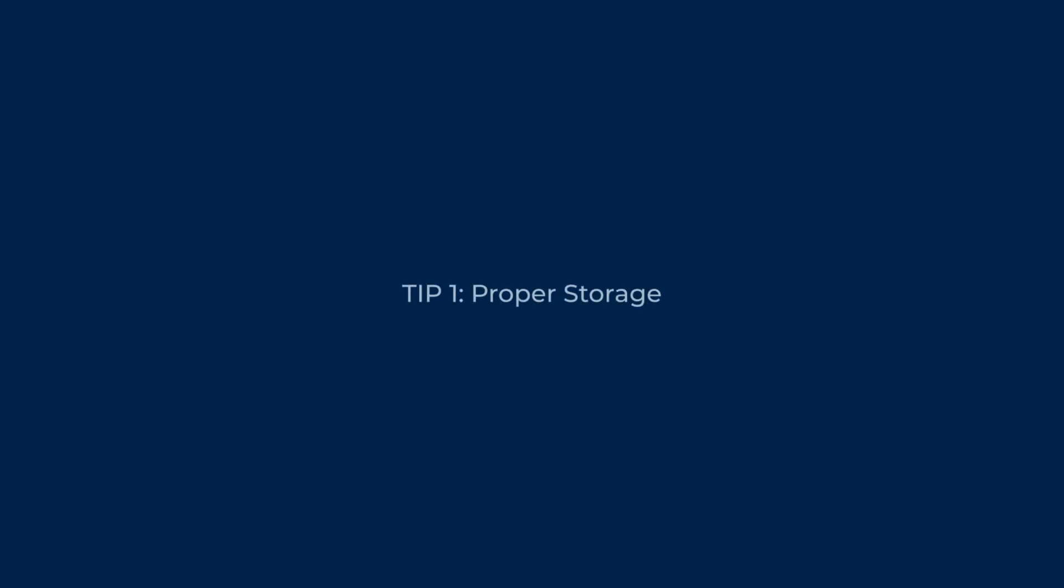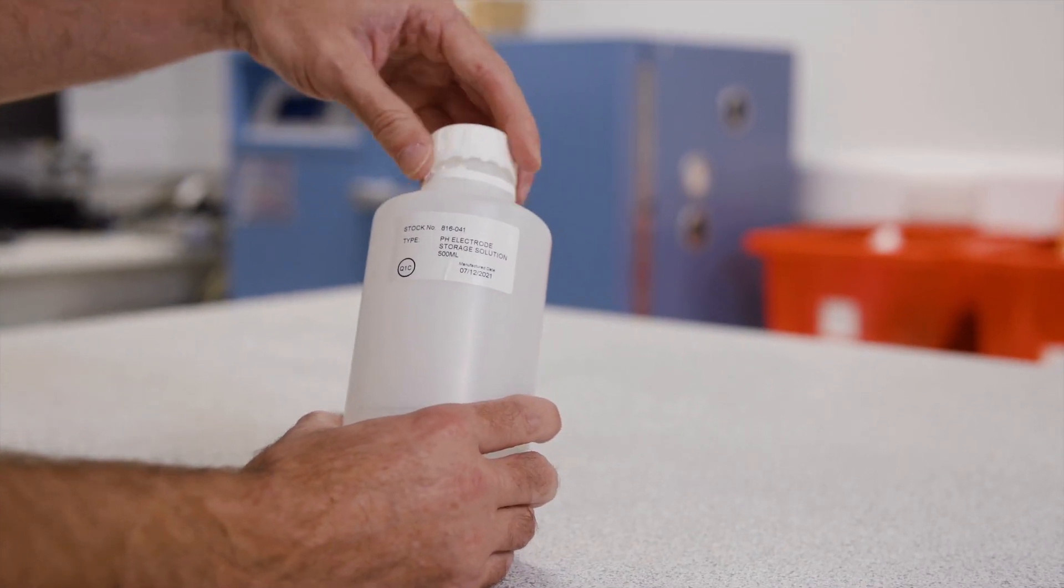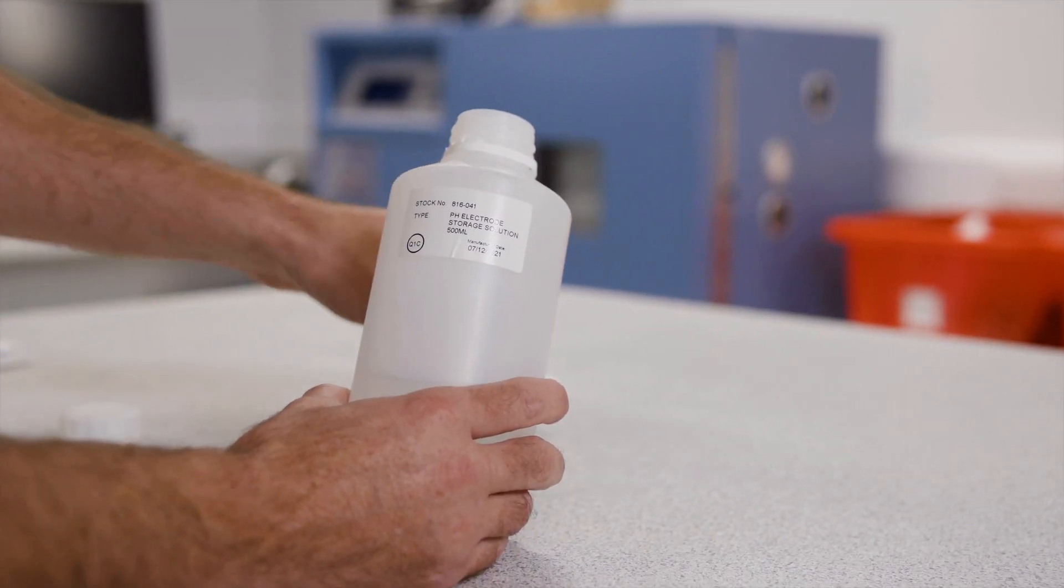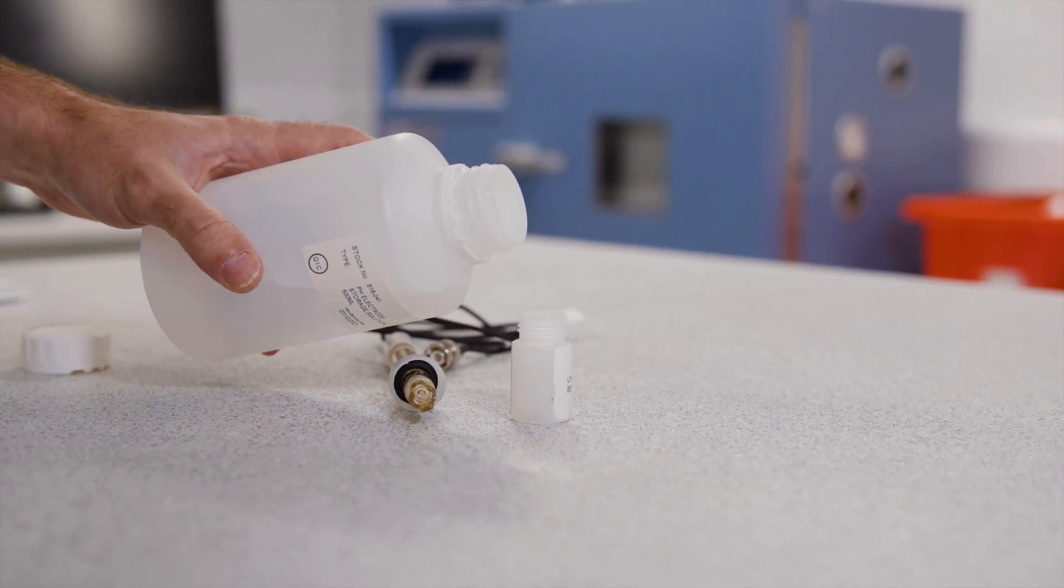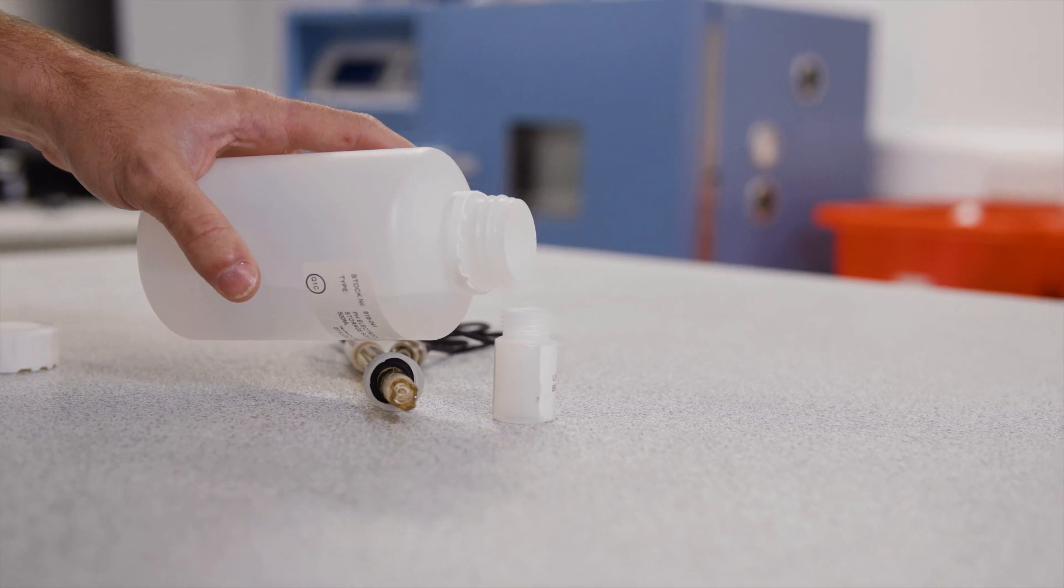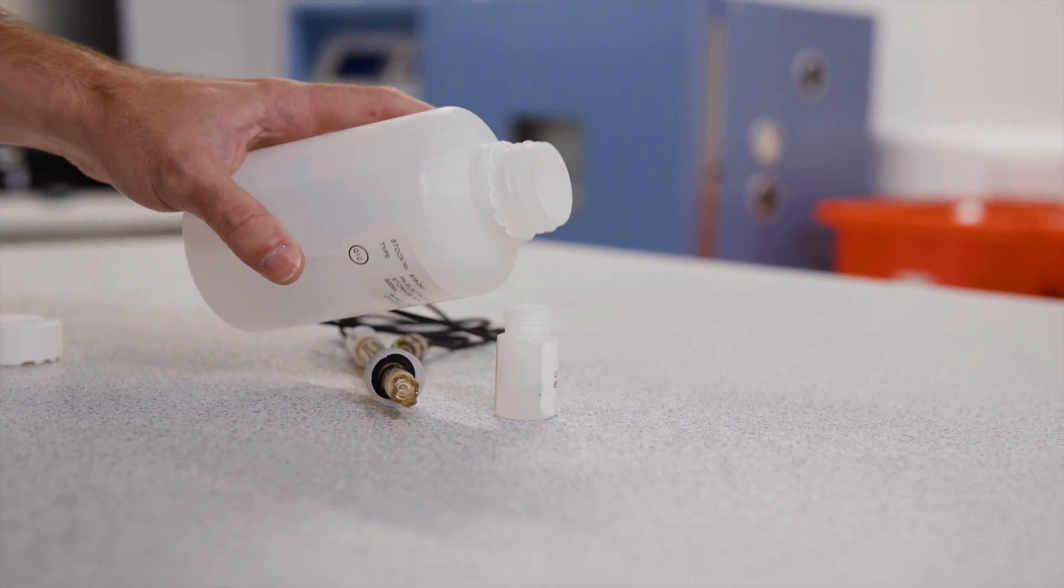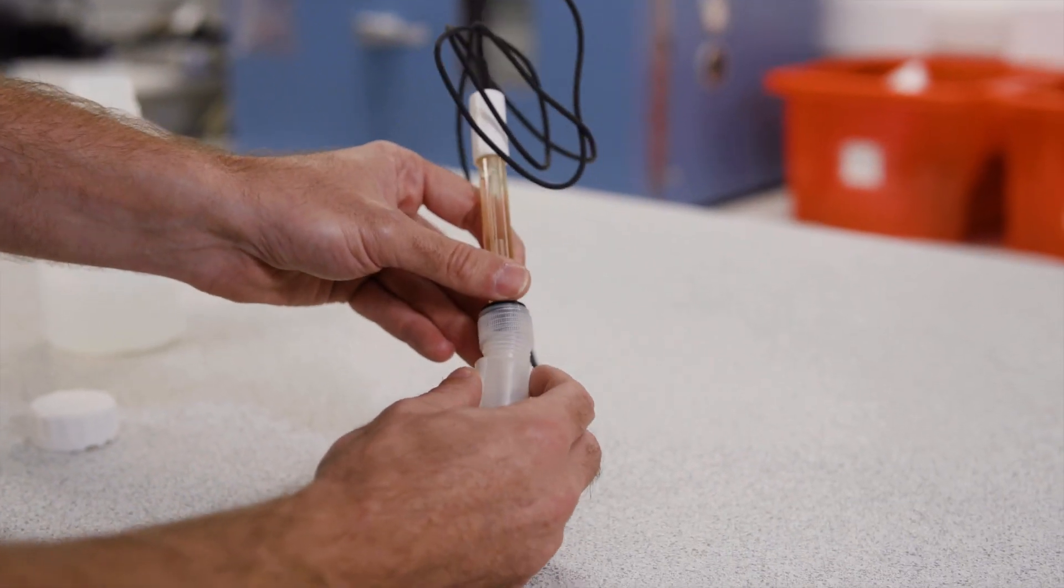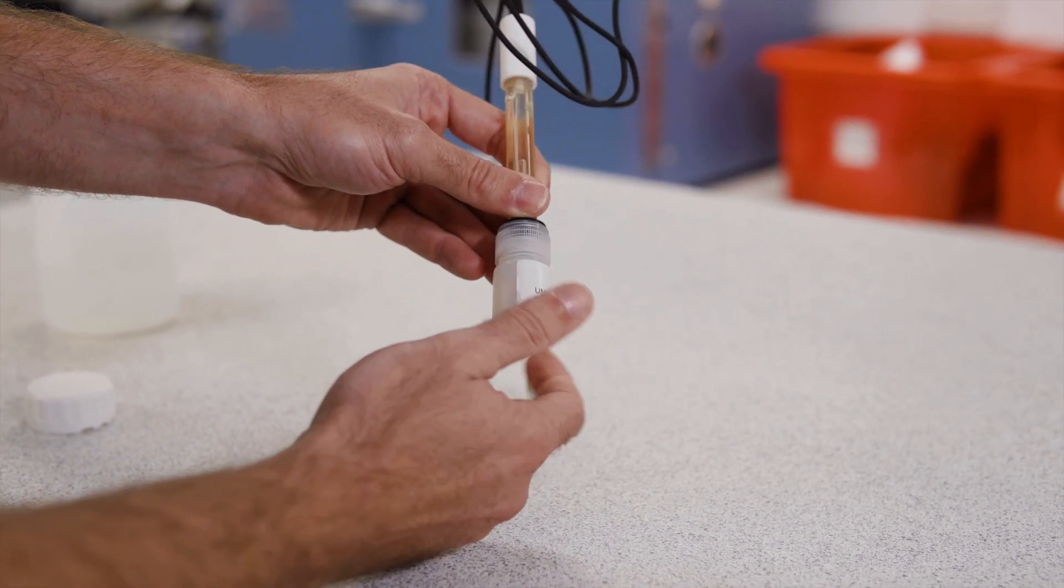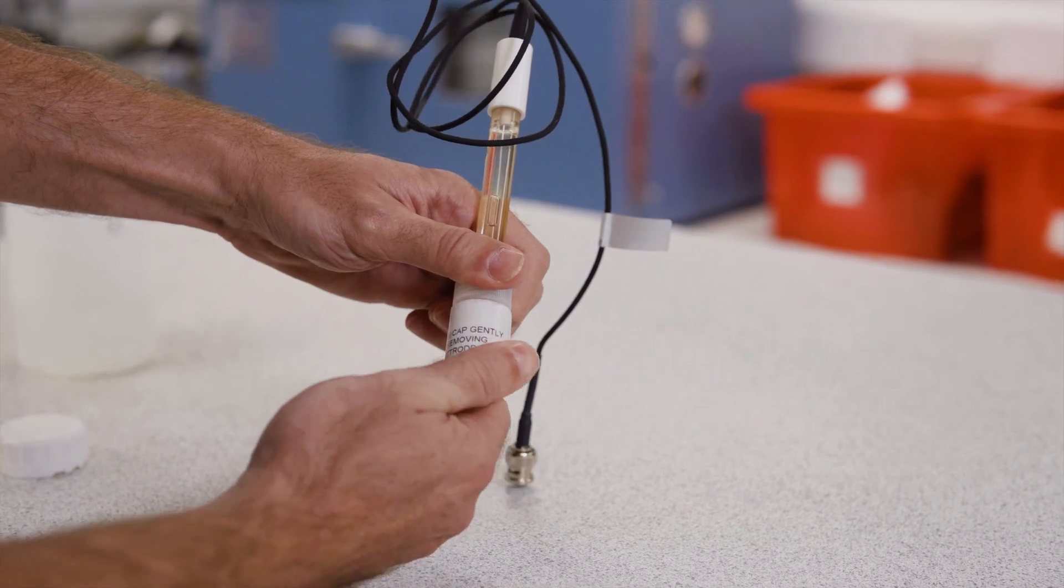When not in use, your pH meter should be stored in a clean and dry environment. Here's how to do it. Rinse the electrode with deionized or distilled water to remove any residues. Fill the electrode cap with storage solution, typically potassium chloride solution, to keep the electrode hydrated. Avoid using tap water for storage as it can introduce contaminants. Place the electrode in its protective cap and store it upright. This prevents damage to the delicate glass membrane and maintains its sensitivity.